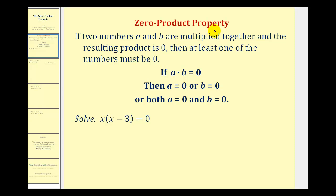The zero product property states: if two numbers a and b are multiplied together and the resulting product is zero, then at least one of the numbers must be zero. So if a times b equals zero, then either a must equal zero, or b must equal zero, or both a and b are equal to zero. We can use this idea to help us solve polynomial equations in factored form.